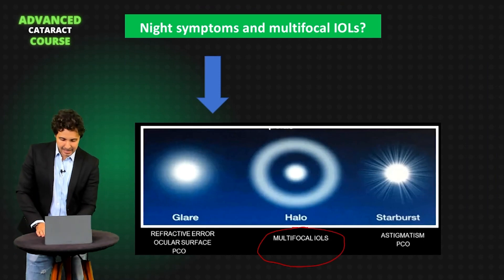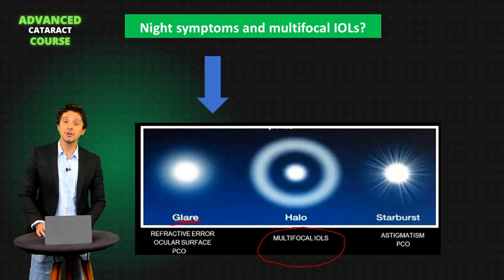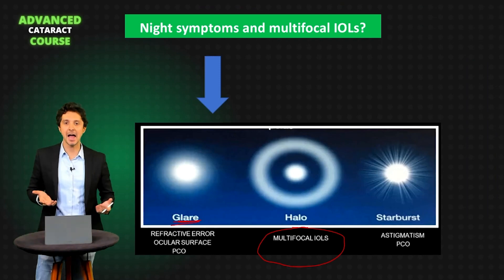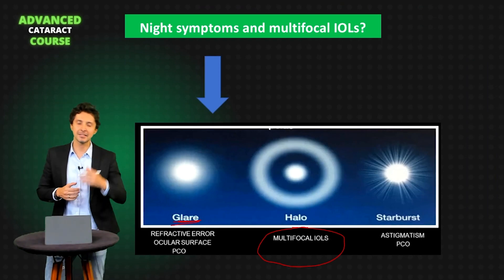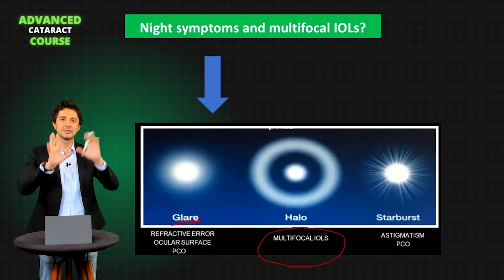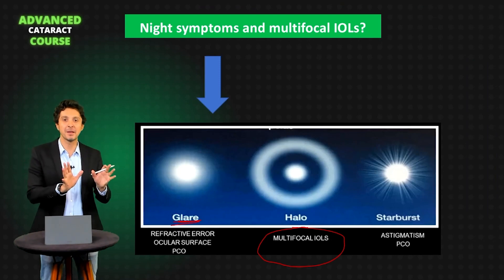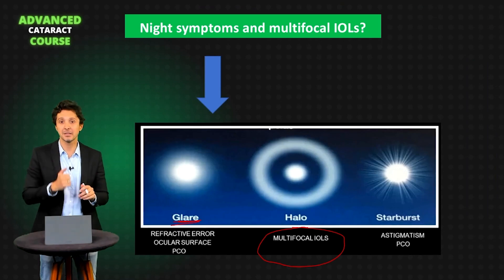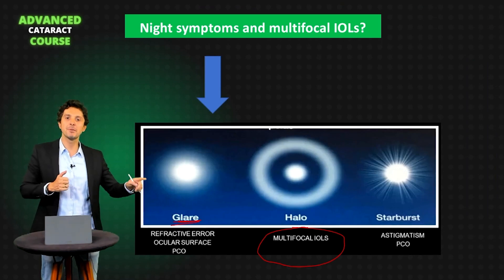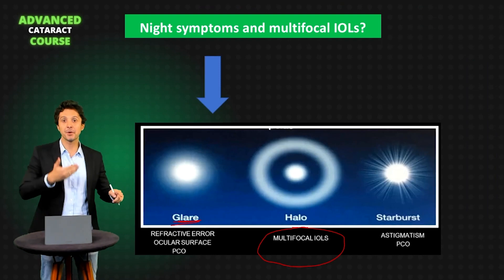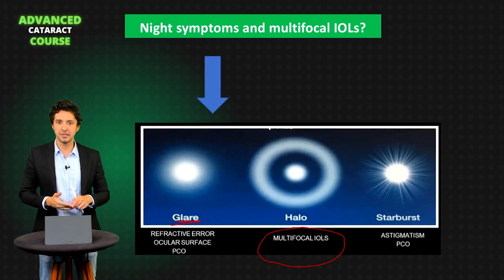The glare is most common with posterior capsular opacity, ocular surface, for example a patient with dry eye. And sometimes the patient asks you, I have a problem during the night. But you don't show your patient what is halo and glare. And you think it's because the trifocal IOL, but it's not. Sometimes the problem is the glare, because of the dry eye that you can observe in the postoperative.